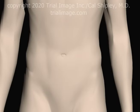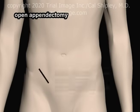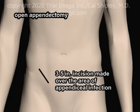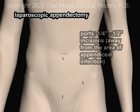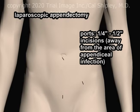Once insufflation of the abdomen has been accomplished, the surgical incisions are made. In contrast to open appendectomy, where a 3 to 5 inch incision is made directly over the infected appendix, laparoscopic appendectomy relies on several small quarter to half inch incisions, all of them made away from the area of appendiceal infection. These small incisions are known as ports.